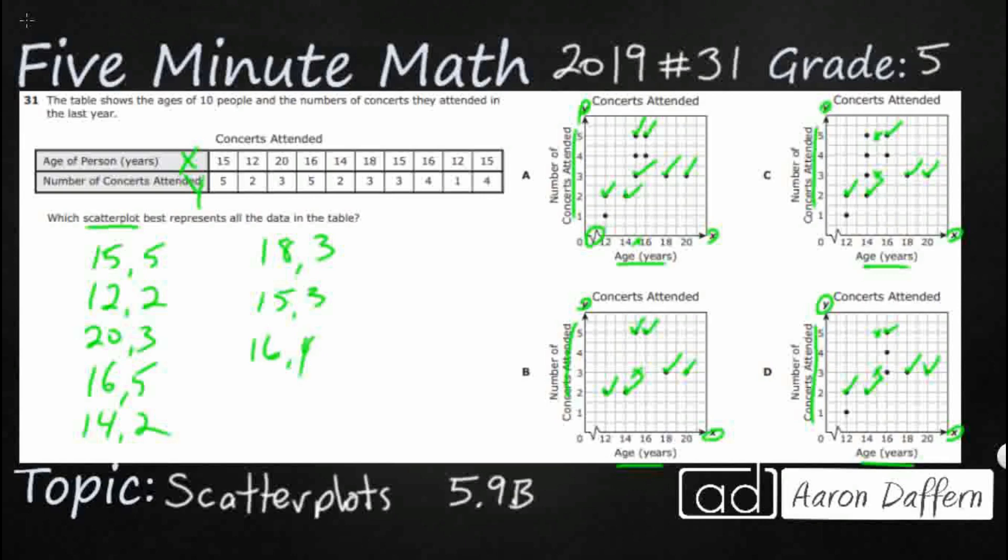16, 4 is yes. 12, 1 is right down there. And then 15, 4 is right there. So B was starting good. It just kind of ran out of dots. And as you can see, our trend, we kind of spike up and then we're going to come back down the older you get. So our answer is A.